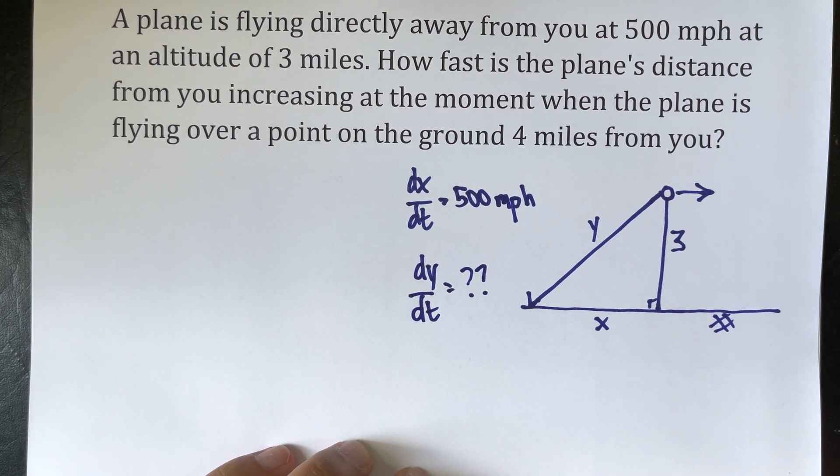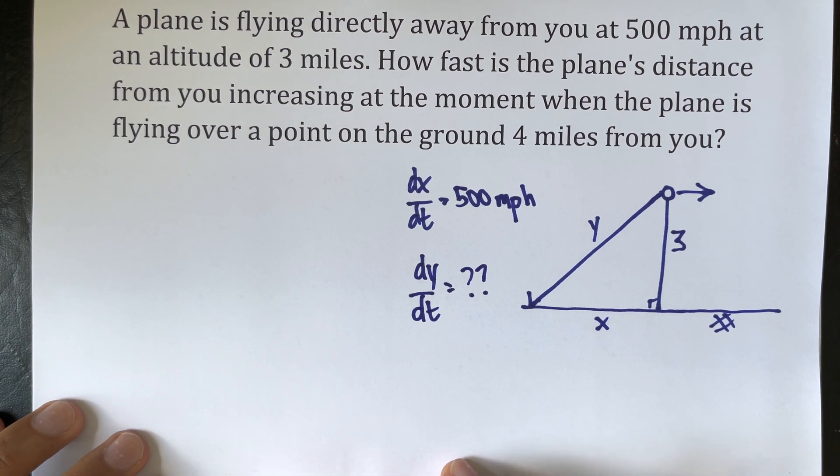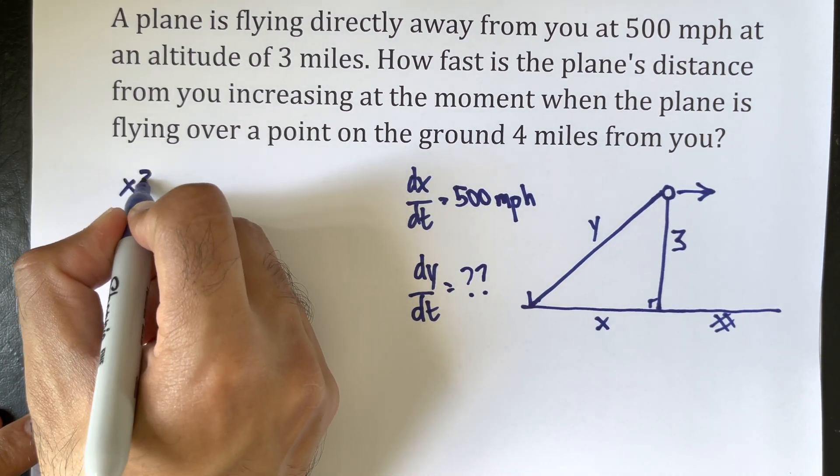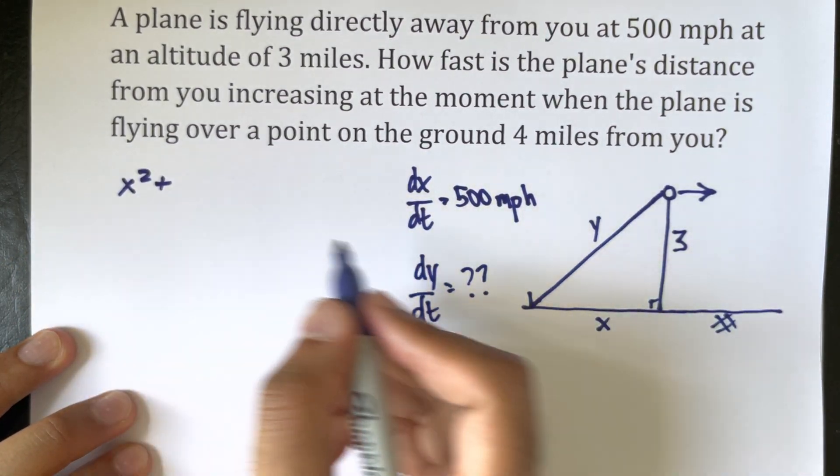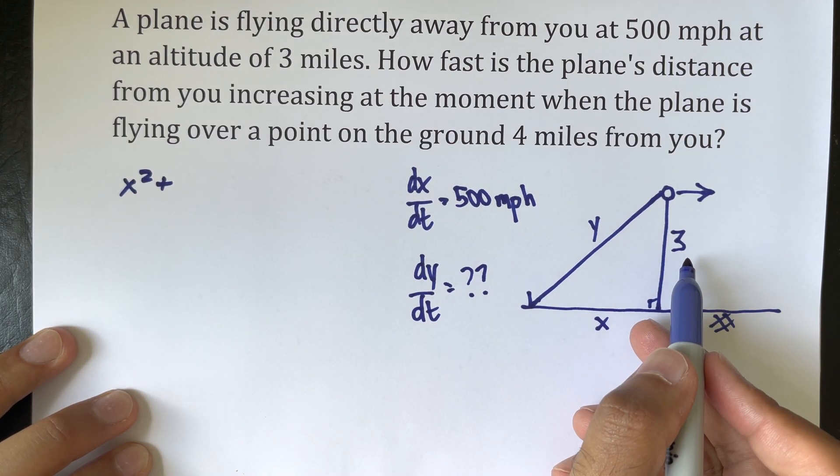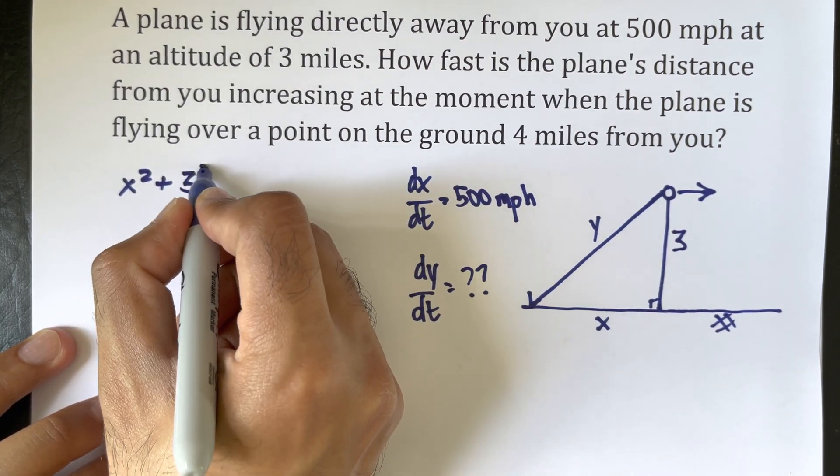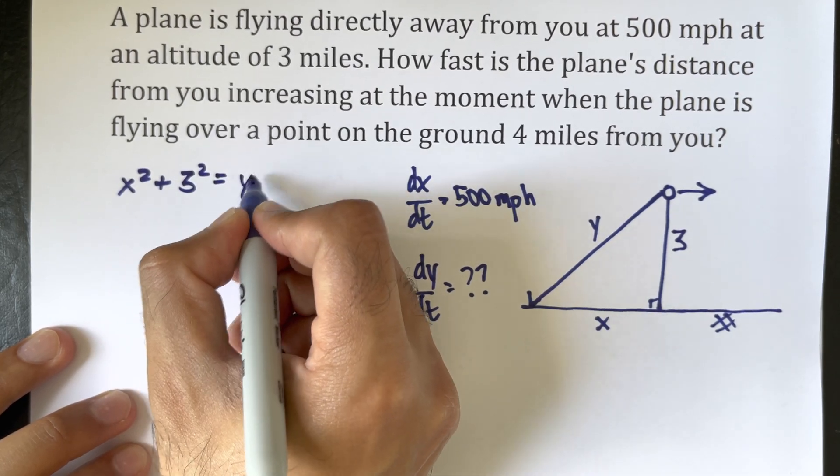So through Pythagorean theorem we know that x squared plus three squared equals y squared.